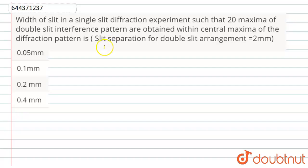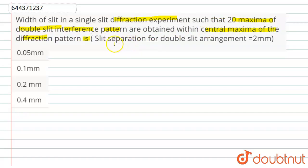Hello dear students. According to the question, the width of the slit in a single slit diffraction experiment is such that 20 maxima of the double slit interference pattern are obtained within the central maxima of the diffraction pattern. It is given that the slit separation for the double slit arrangement is 2 mm.